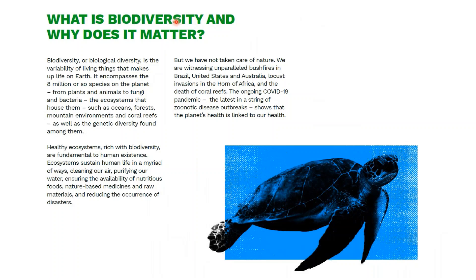Biodiversity, or biological diversity, is the variability of living things that makes up life on Earth. It encompasses the 8 million or so species on the planet, from plants and animals to fungi and bacteria, the ecosystems that house them — such as oceans, forests, mountain environments, and coral reefs — as well as the genetic diversity found among them. Healthy ecosystems, rich with biodiversity, are fundamental to human existence. Ecosystems sustain human life in a myriad of ways: cleaning our air, purifying our water, ensuring the availability of nutritious foods, nature-based medicines, and raw materials, and also reducing the occurrence of disasters.